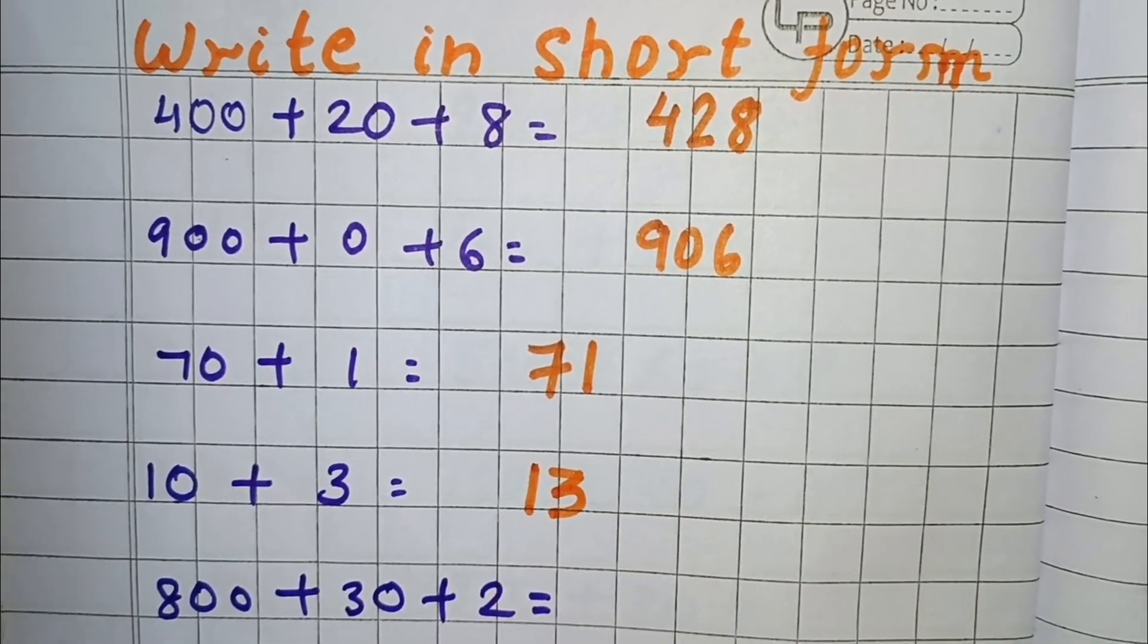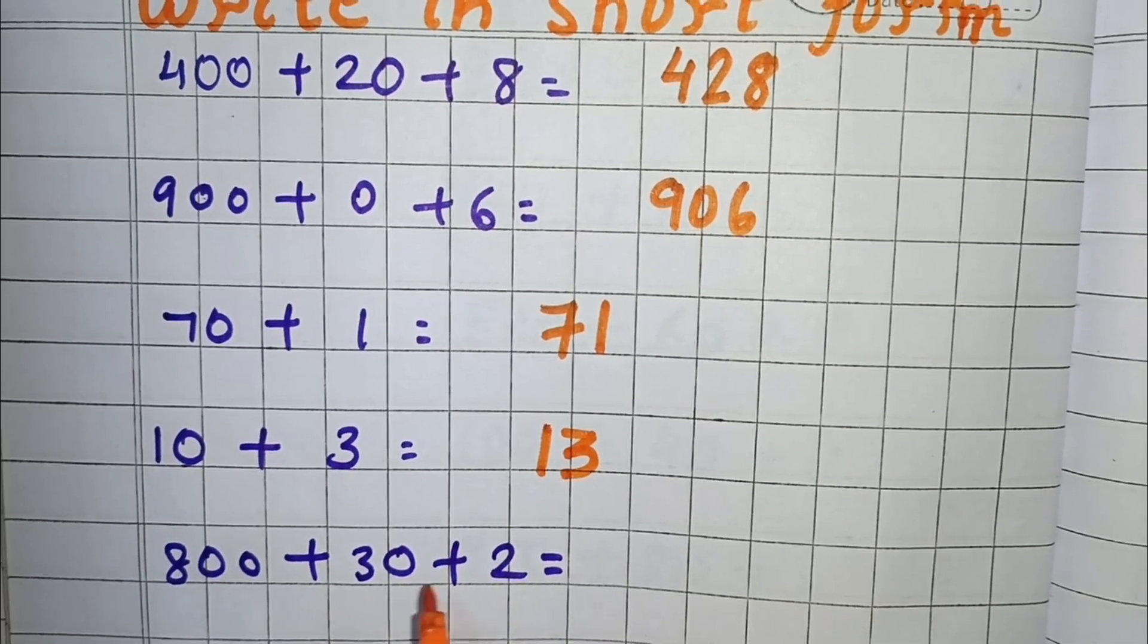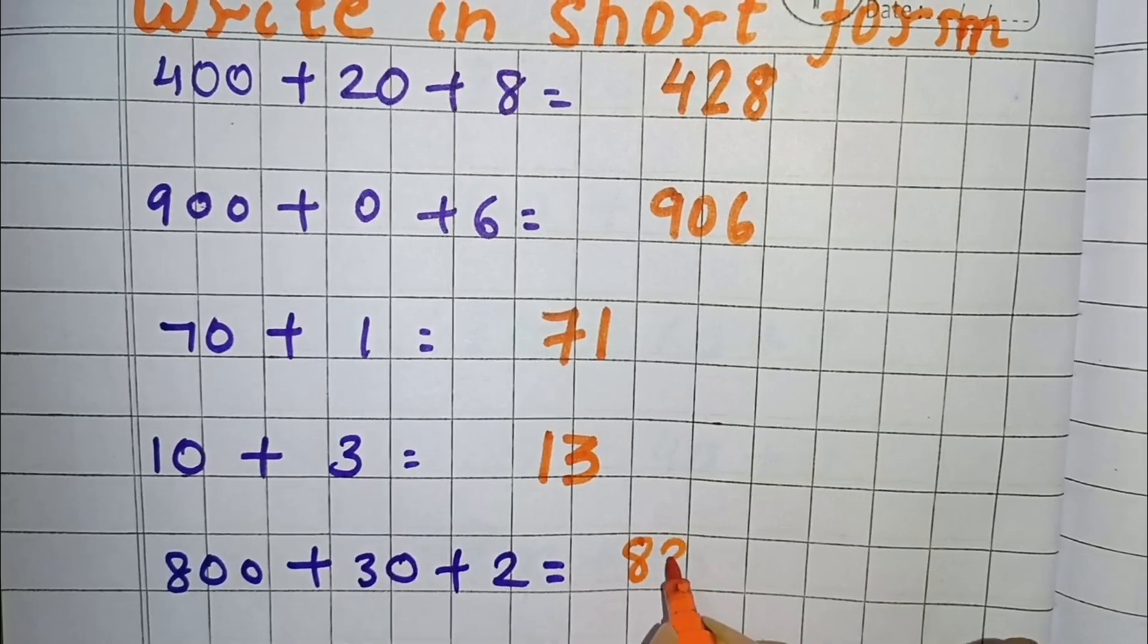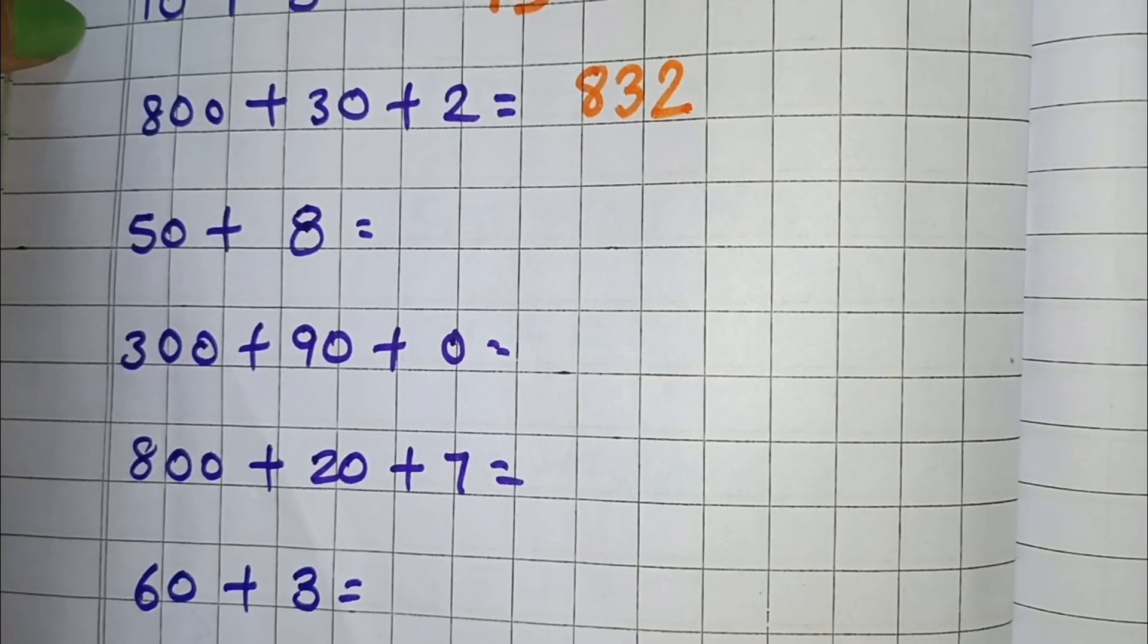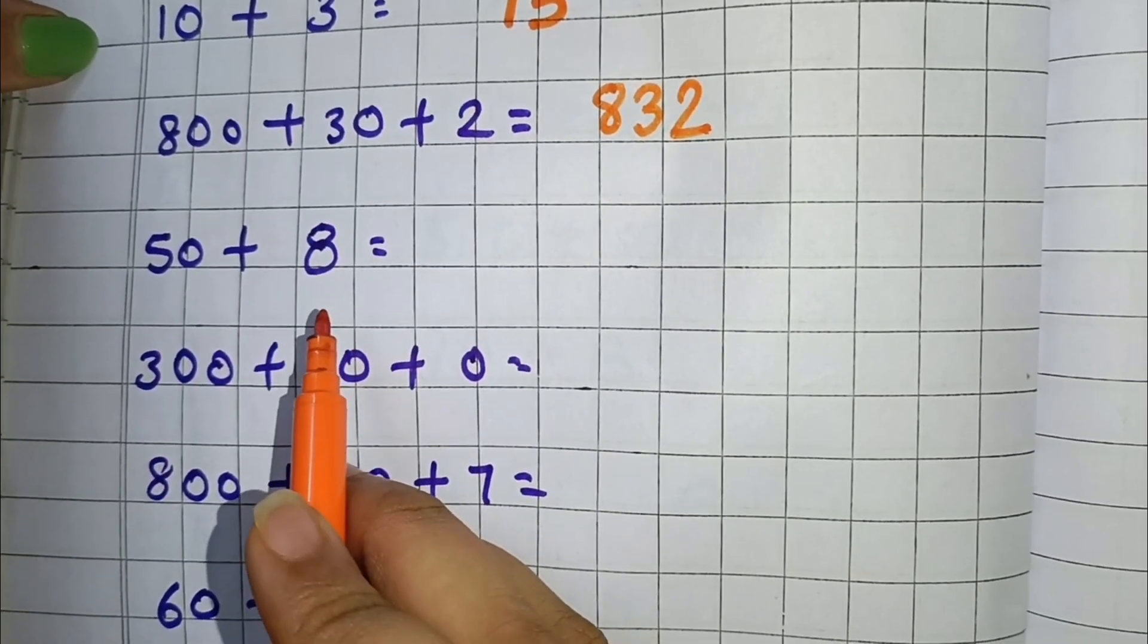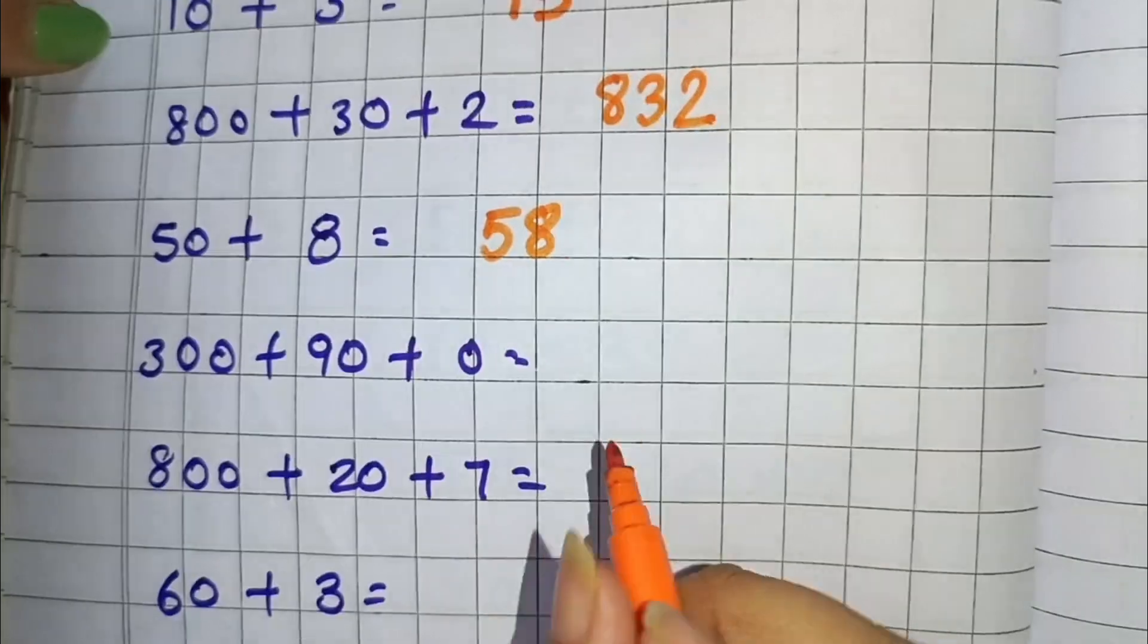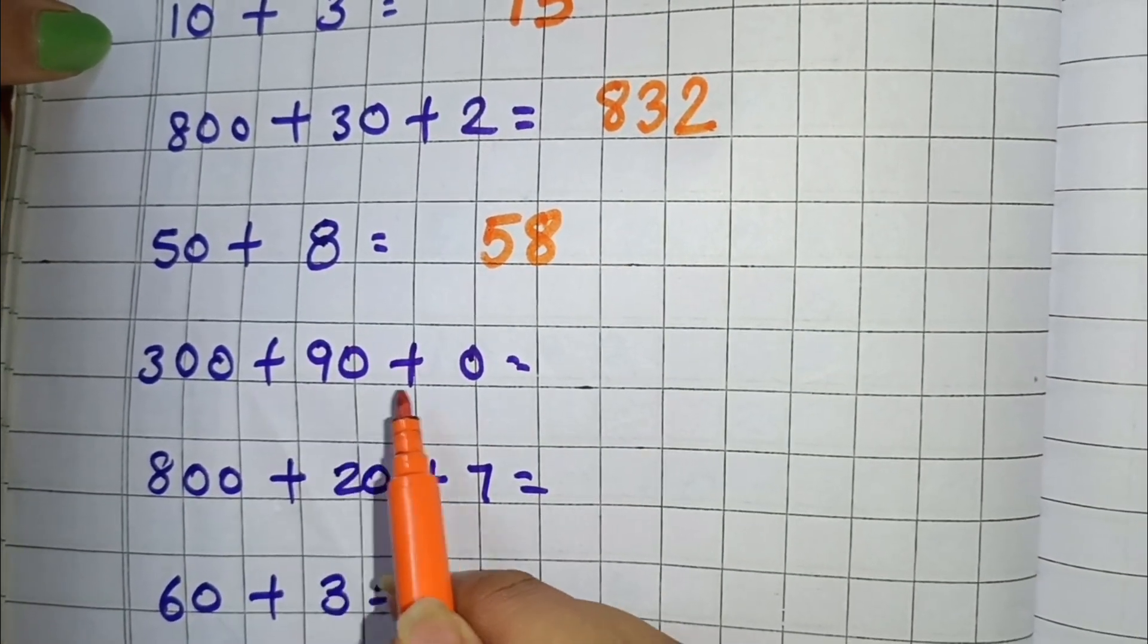Now next we have 800 plus 30 plus 2, so you can write 832 as its short form. Next we have 50 plus 8, so its short form will be 58. Next is 300 plus 90 plus 0.